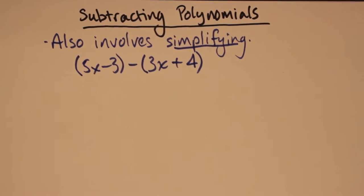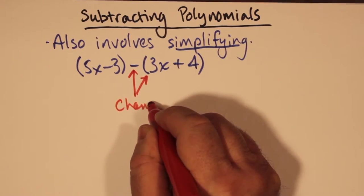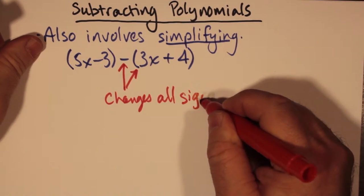Because the 3x minus 4 is a polynomial that we're subtracting, it's like we're putting it in brackets. If we're subtracting a polynomial, it means that the polynomial we're subtracting has to have all its signs flipped over. So it's like saying really 5x minus 3 minus 3x minus 4.